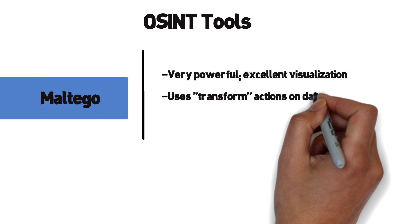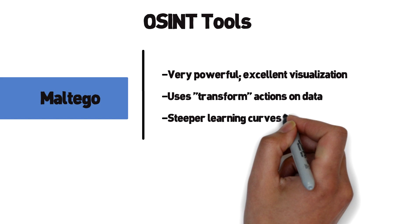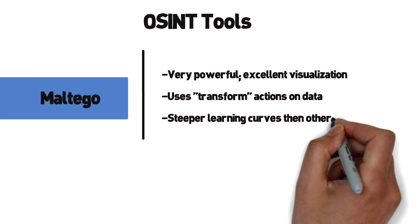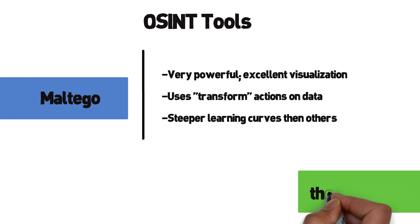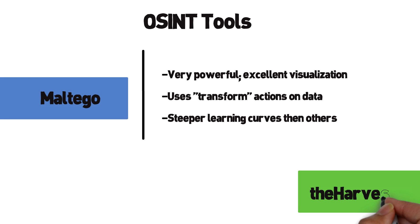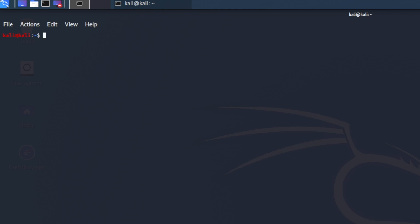Part of Maltego's power is in the visualizations and connections to pieces of information as it's obtained — extremely useful as we move on to later steps in the kill chain and plot out areas we want to focus on for our attacks. While the learning curve is a bit steep, Maltego is extremely powerful. It also provides third-party plugins to support queries of other data feeds like Shodan that you can use as a transform action.